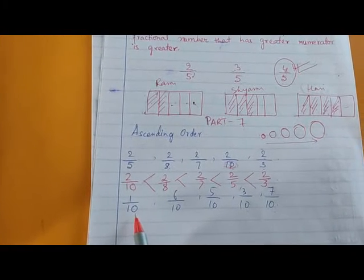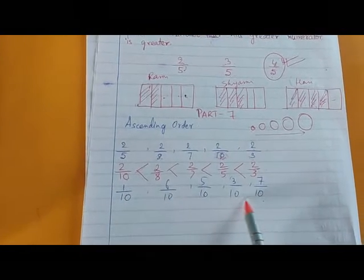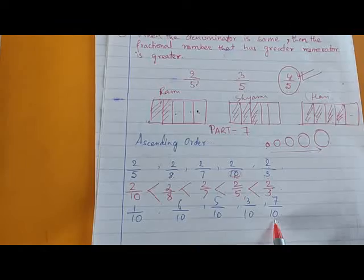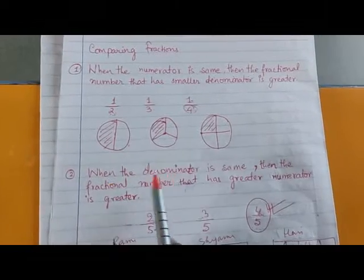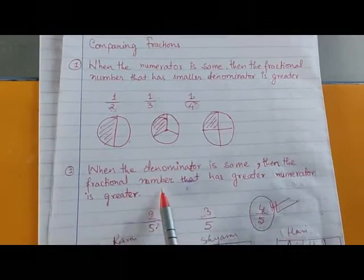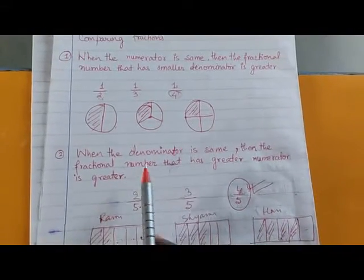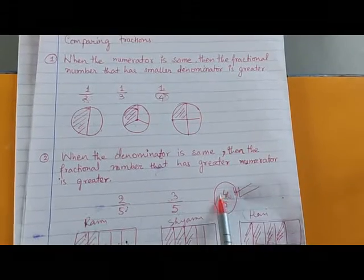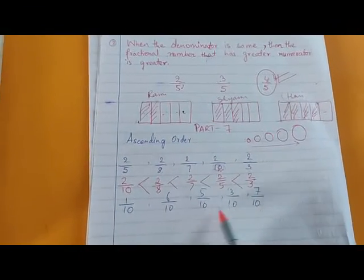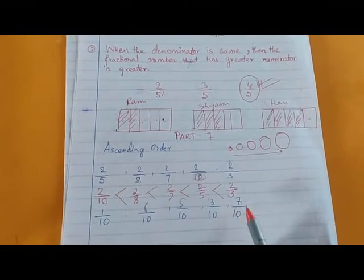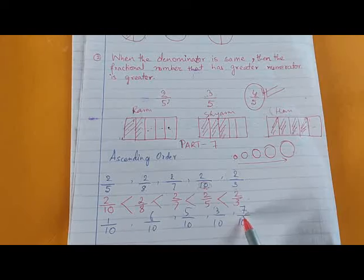In the second question you can see that all the denominators are same. When the denominator is same, we follow the second rule: the fractional number that has the greater numerator is greater. When denominators are same, the fraction with the largest numerator is the biggest.